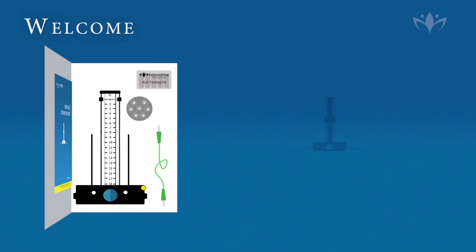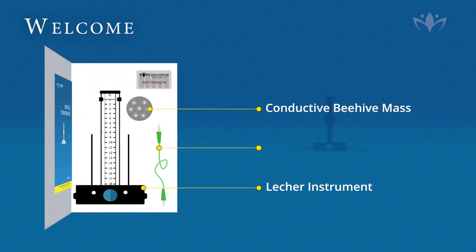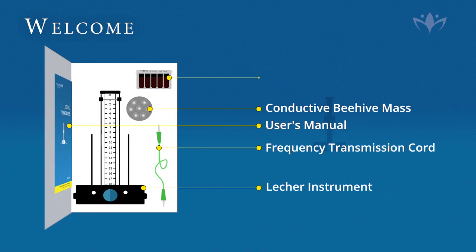In addition to the Lecher Instrument found in your protective case, you will also find a conductive beehive mask and frequency transmission cord, a user's manual, and a test kit with five substances. For further information on these items, please refer to your user's manual.